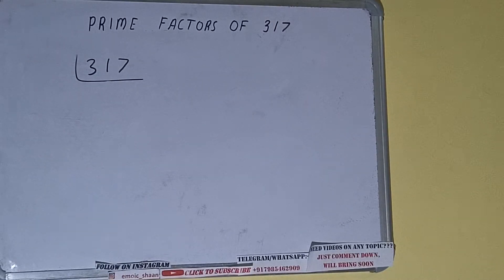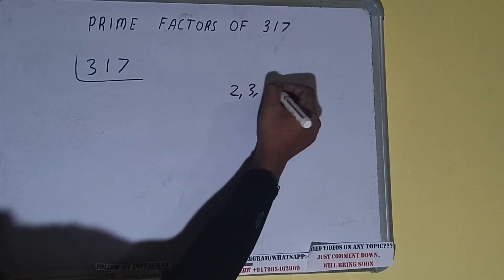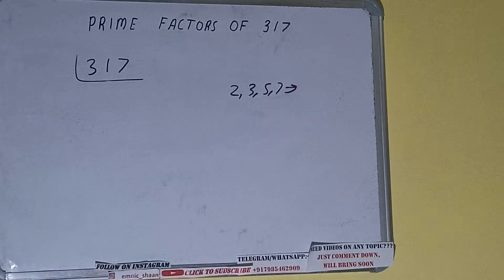So prime numbers are numbers that are divisible by 1 and the number itself like 2, 3, 5, 7 and so on.